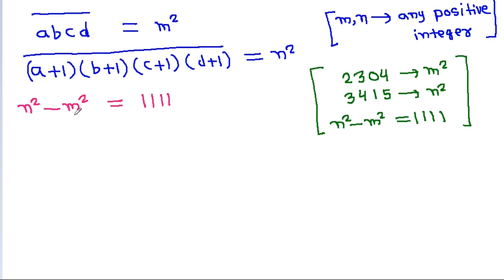And N squared minus M squared is N plus M times N minus M equals 1111, and 1111 is 11 times 101, and 101 is a prime number.